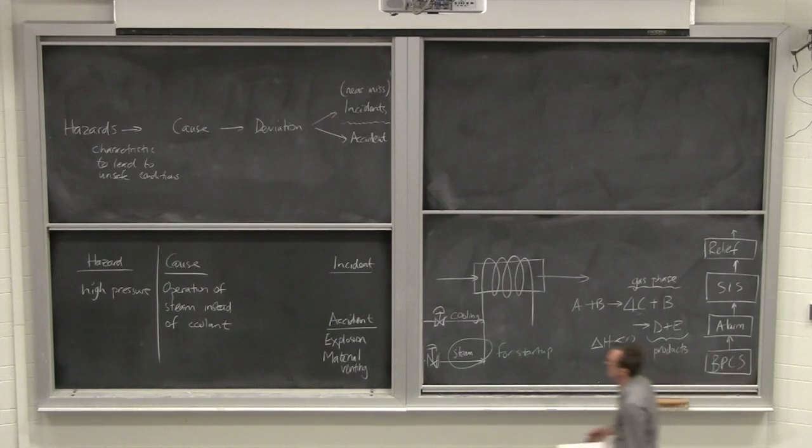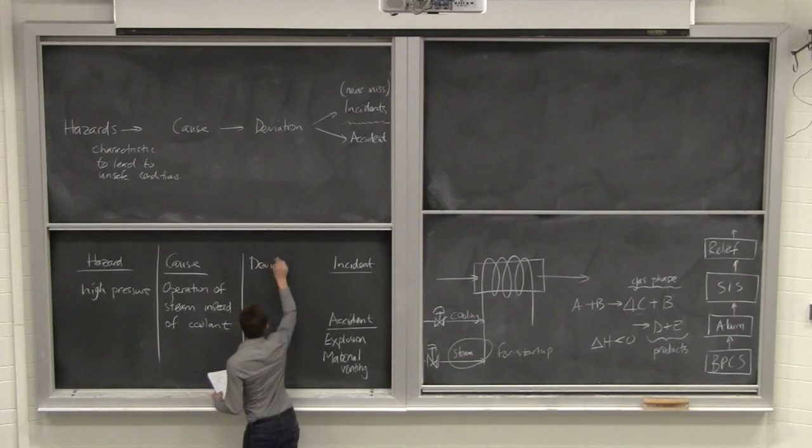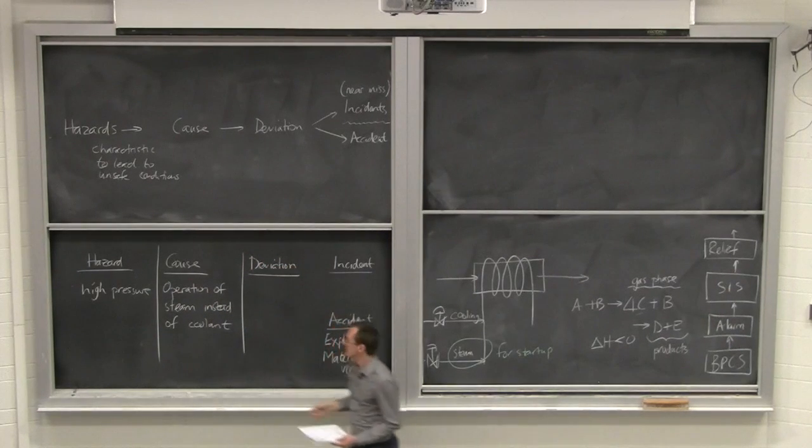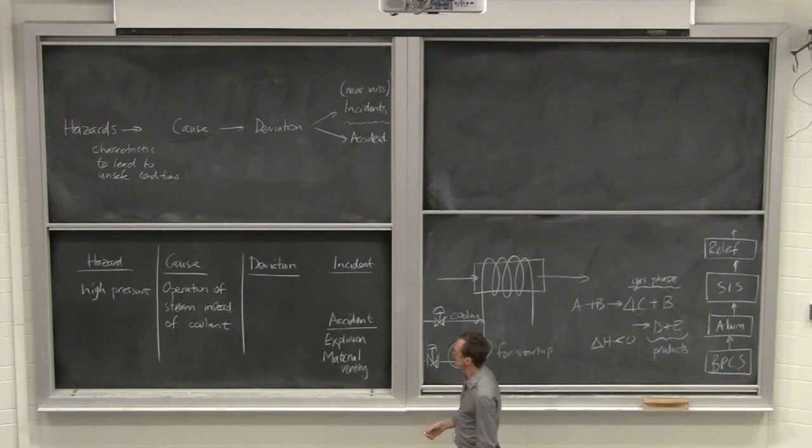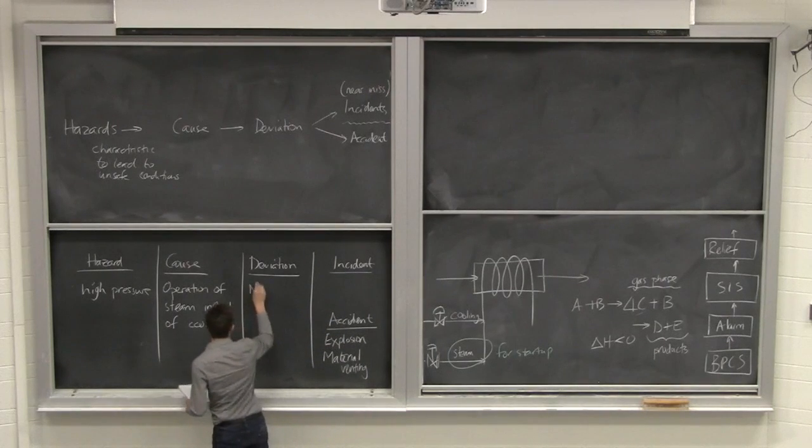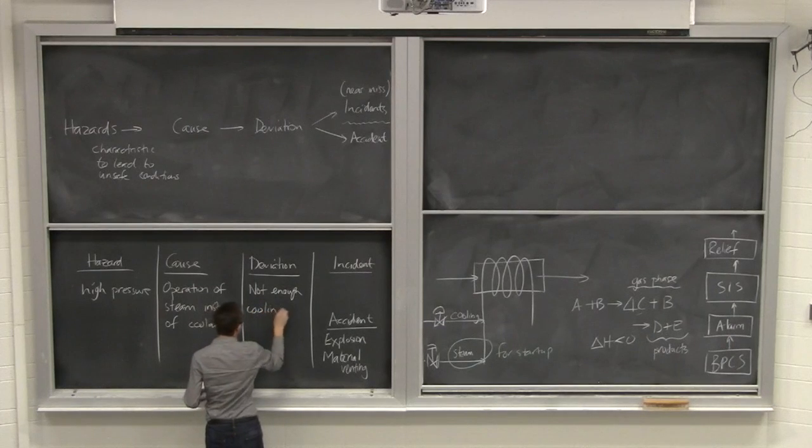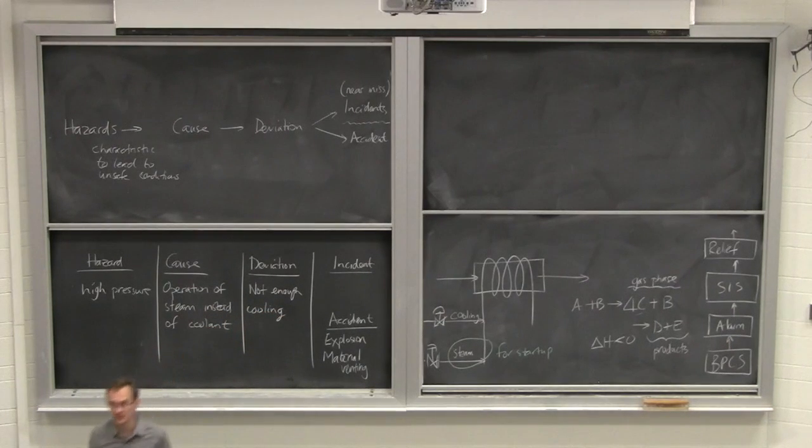And because we're forming four moles of it there on the one side, we're getting this excess gas being formed, leading to a buildup of pressure. So we remember that from reactor design, right? We've got more moles here on the right-hand side than on the left, and so that can build up a pressure in the reactor if that reaction is driven forward. Okay, so that's my cause. The deviation then, there was a deviation when we do that. Operating the steam instead of the coolant, the deviation is that we have not enough cooling.